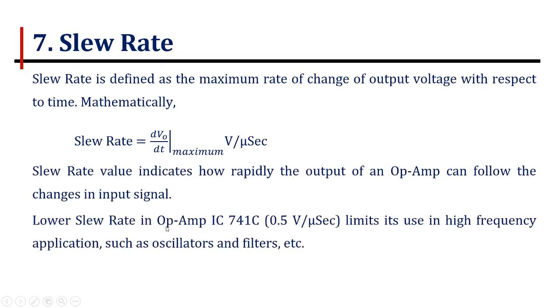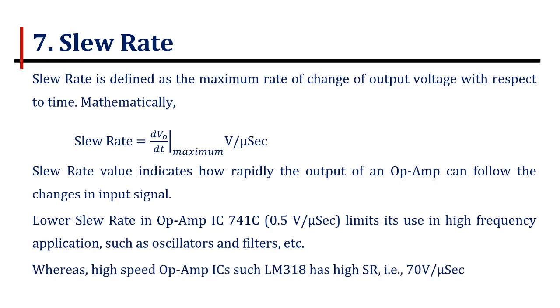Lower the slew rate in op-amp IC 741, that is 0.5 volts per microsecond, limits its use in high frequency applications such as filters and oscillators. Whereas high speed op-amp ICs such as LM318 has high slew rate, that is 70 volts per microsecond.